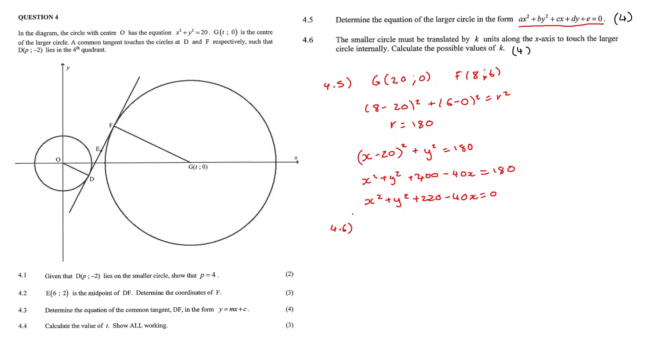Question 4.6: The smaller circle must be translated k units along the x-axis to touch the larger circle internally. Calculate the possible values of k. So for our small circle, our radius is equal to the square root of 20, which is 2 root 5. For our large circle, we have a radius of the square root of 180, which is 6 root 5. And since G is the point 20 and 0,